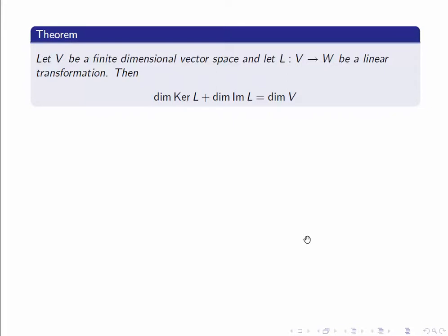The theorem is about linear transformations between finite dimensional vector spaces, though in principle the image space W doesn't have to be finite dimensional. So let V be a finite dimensional vector space and let L from V to W be a linear transformation. Then the Rank Nullity Theorem says that the dimension of the kernel of this map — the nullity — plus the dimension of the image — the rank — is equal to the dimension of the domain V.